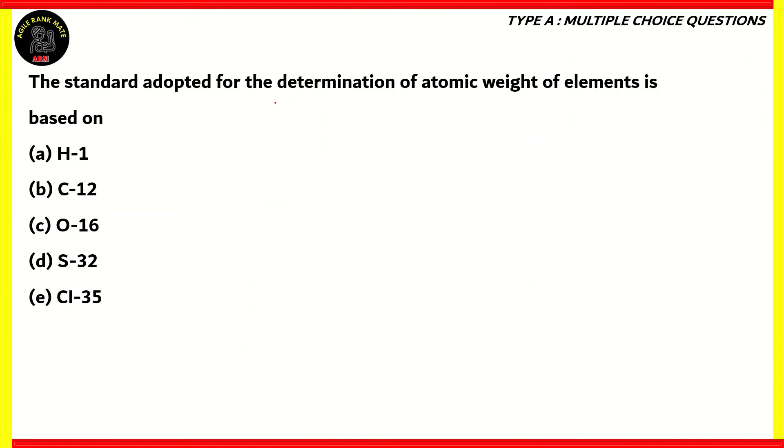So let's look at another question. The standard adopted for the determination of atomic weight of elements is based on: (a) H-1, (b) C-12, (c) O-16, (d) S-32, (e) Cl-35. Now, in chemistry, when we look at atomic weight as a concept, we use the unit AMU, which is atomic mass unit.